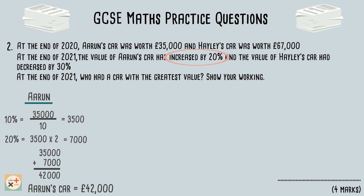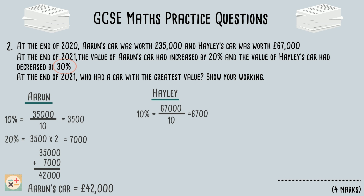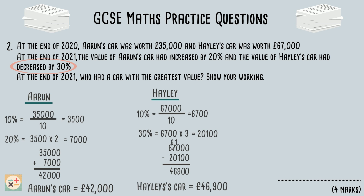Now we can follow a similar method to work out the new value of Hayley's car. Firstly, find 10%. Next we can multiply this answer by 3 to find out what 30% is. We are told that the value of Hayley's car has decreased by 30%, so we subtract 30%, which is £20,100, from the original value of £67,000. We now know that the value of Hayley's car at the end of 2021 is £46,900. Therefore, it is Hayley's car which has the greater value at the end of the year 2021.